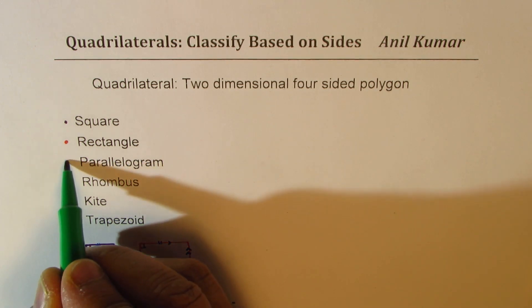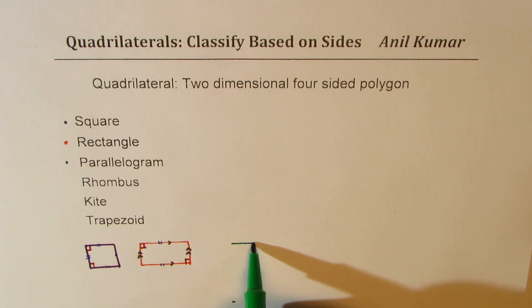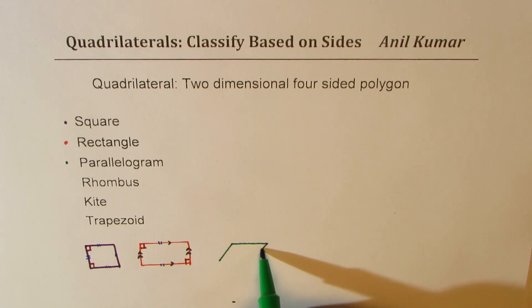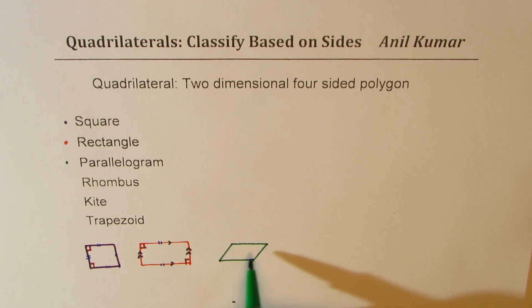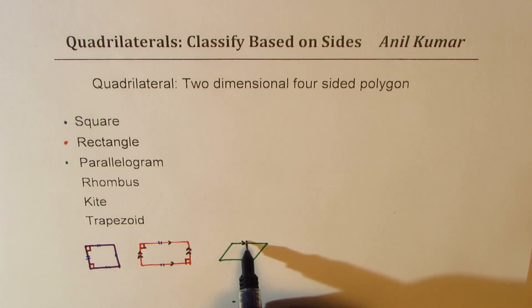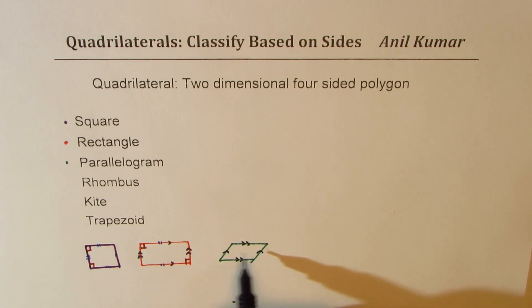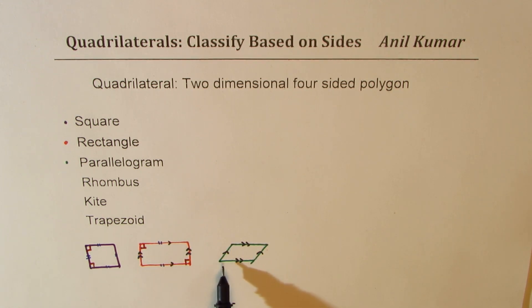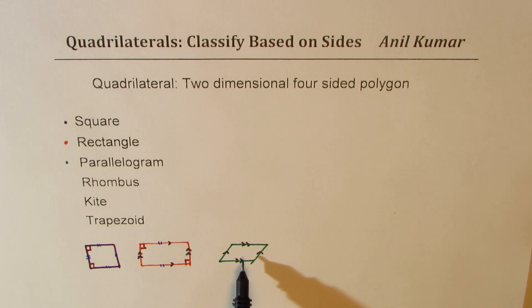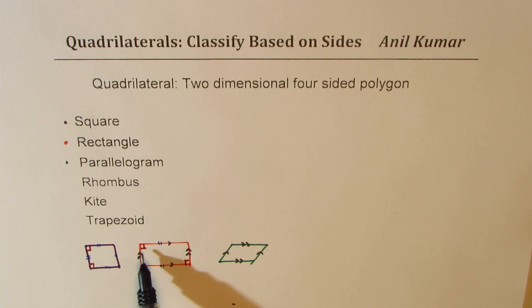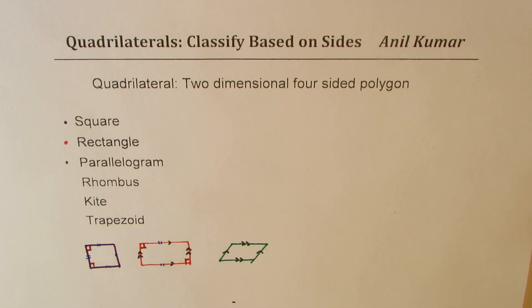When we move to parallelograms, we're talking about two-dimensional figures where opposite pairs are parallel, but they do not intersect at 90 degrees. We do have two pairs of parallel sides, as in a rectangle and a square, but we do not have 90-degree intersecting angles. So you could consider a square or rectangle also as a parallelogram, since they have two sets of parallel sides — they are special because they also have 90 degrees, whereas in a parallelogram it could be any angle.